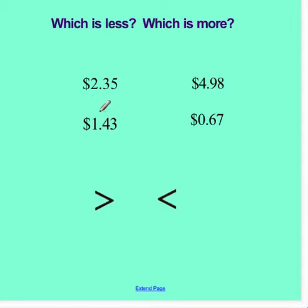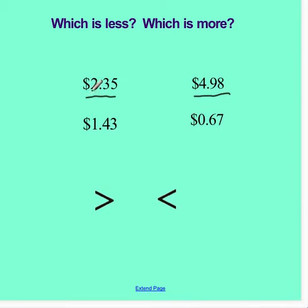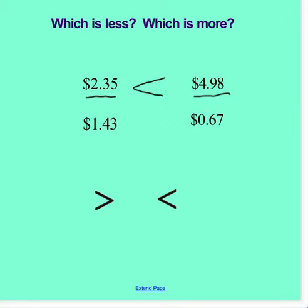Now we're going to compare a couple of sets of numbers. I want to compare $2.35 to $4.98. I can start by looking at my biggest place value, which is the dollars. This number I have $2. Over here I have double that — I have $4. So I know $4.98 is greater than $2.35.